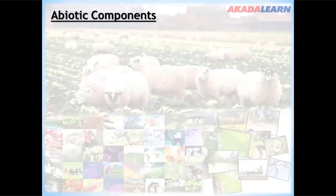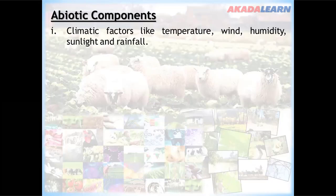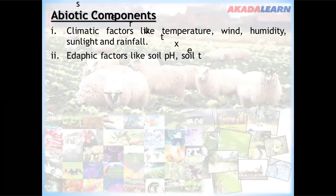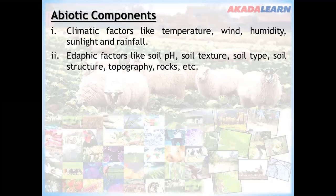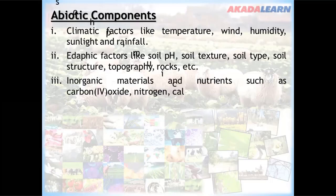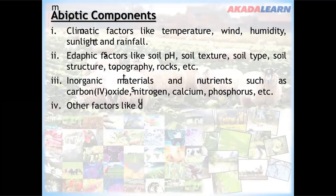Abiotic components include: climatic factors like temperature, wind, humidity, sunlight, and rainfall; edaphic factors like soil pH, soil texture, soil type, soil structure, topography, and rocks; inorganic materials and nutrients such as carbon dioxide, nitrogen, calcium, and phosphorus; and other factors like dust, storm, fire, and water.